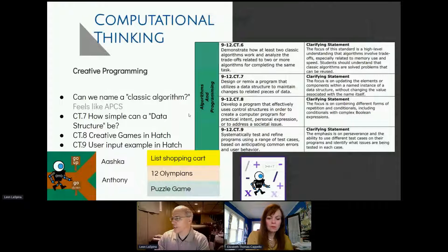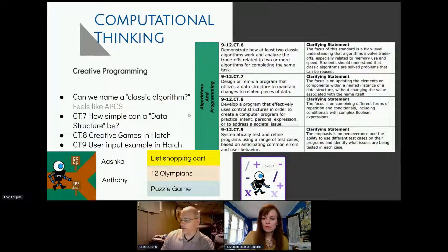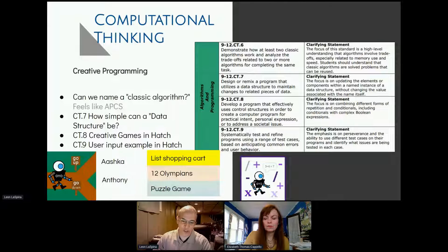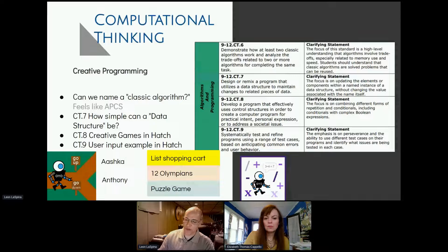Standard six says 'demonstrate how at least two classic algorithms work and analyze the trade-offs related to two or more algorithms for completing the same task.' That's what I would consider a very high-level standard. I could probably get many of my ninth graders to understand sorting. Now we're going to do two different kinds of sorting and show how they accomplish the same task in different ways. Search is another classic algorithm — if your list happens to be sorted, you can do what's called a binary search. That's not a topic I've attempted with my ninth graders, but it's definitely covered in the AP class.